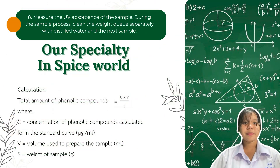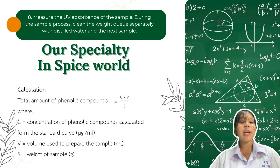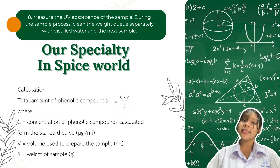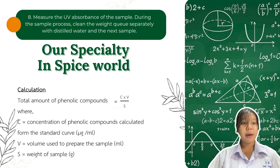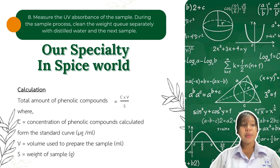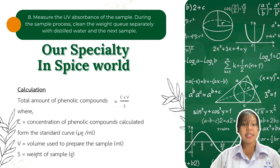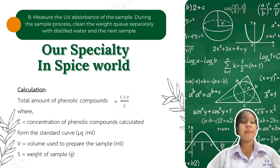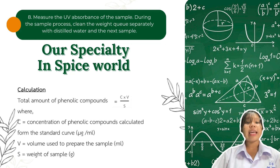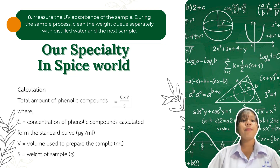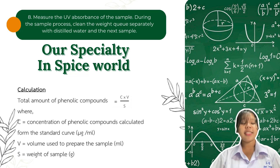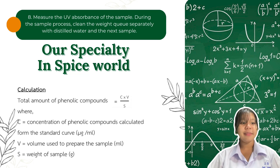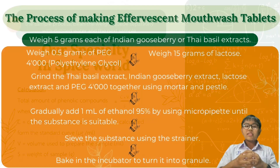Calculation: total amount of phenolic compound, where C = concentration of phenolic compound calculated from the standard curve (micrograms per ml), V = volume used to prepare the sample (ml), and W = weight of the sample (g).